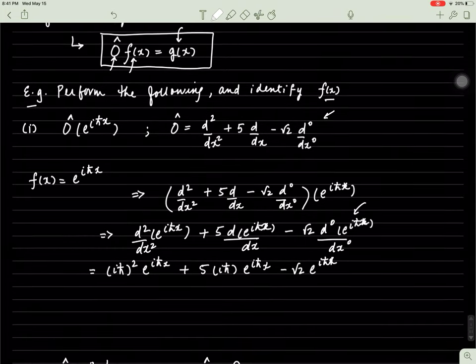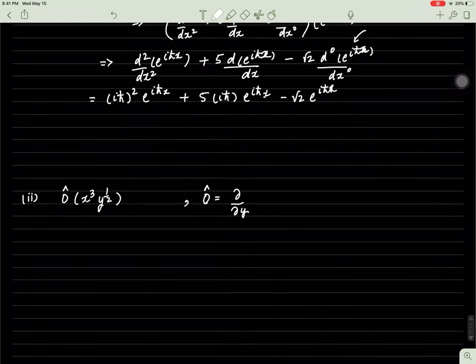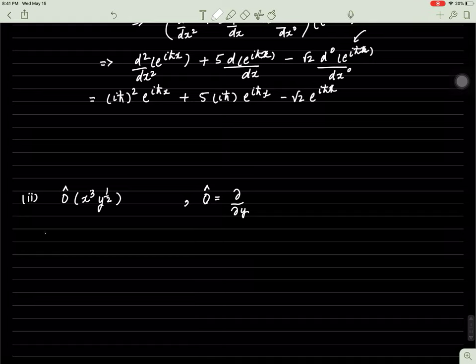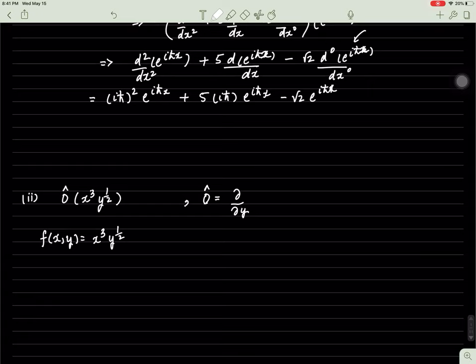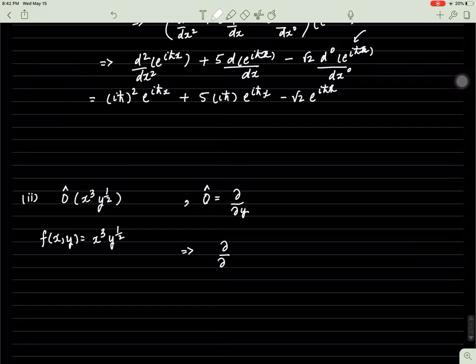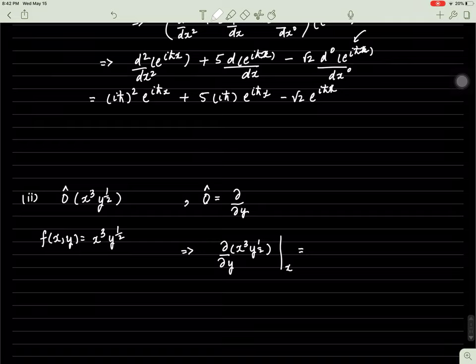You can simplify this a little bit further. The next thing is I have not just f of x, I have f of x and y, and it's equal to x cubed multiplied by y to the exponent one half. You're asked to perform this operation on it. You're supposed to take the partial derivative with respect to y of this function. That means you're holding x constant while taking the derivative with respect to y, and this is how we usually do partial derivatives.